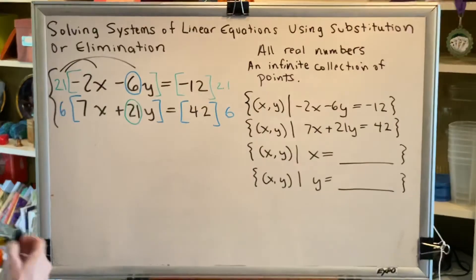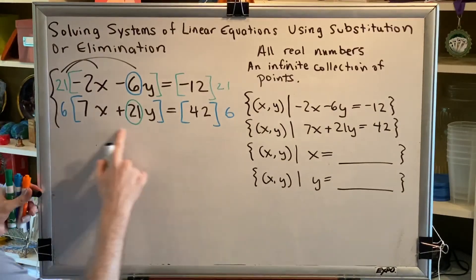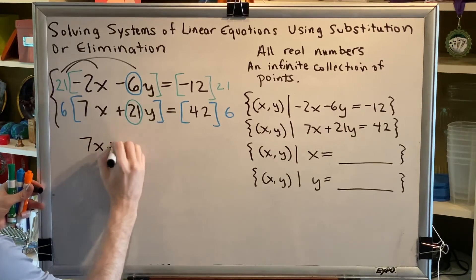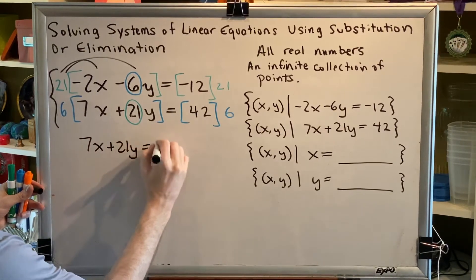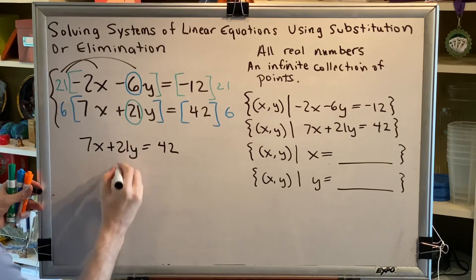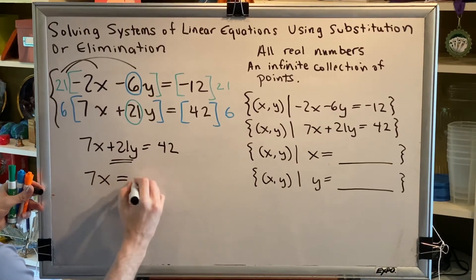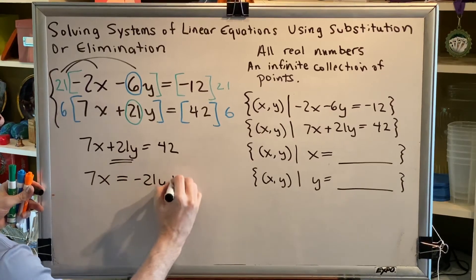Perhaps the easiest equation to do that with is original equation 2, since there are no negatives. 7x plus 21y equals 42. To solve this for x, move the plus 21y to the other side. We would have 7x equals negative 21y plus 42.